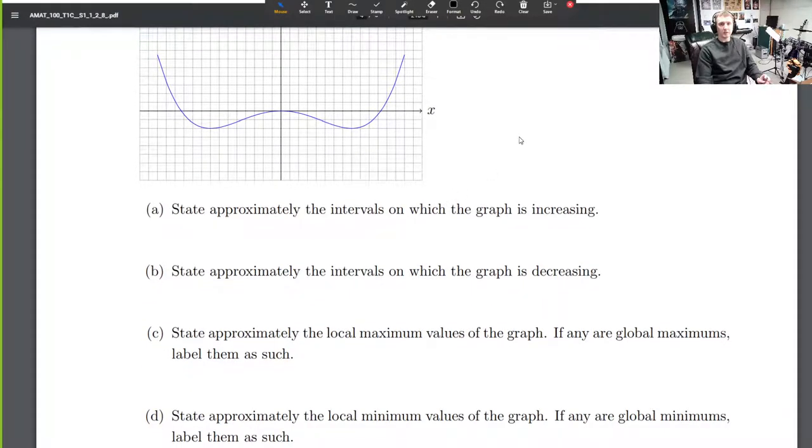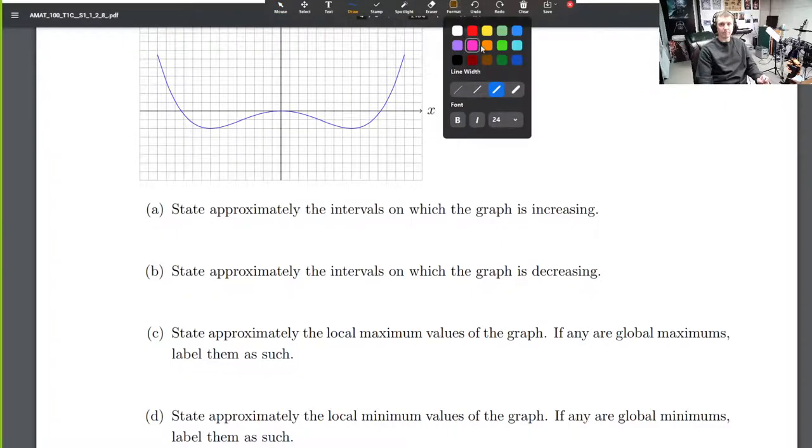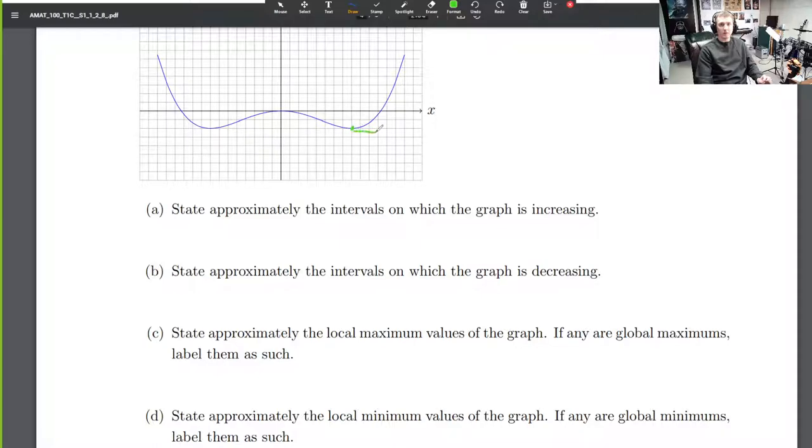State approximately the intervals on which the graph is increasing. Okay. Looks like from here to the right it's increasing. Looks like from here to here it's increasing, it's rising. So let's estimate these intervals. From there to there, this is negative 1, 2, 3, 4, 5, 6, 7, 8. Hold on. Negative 8 to 0.